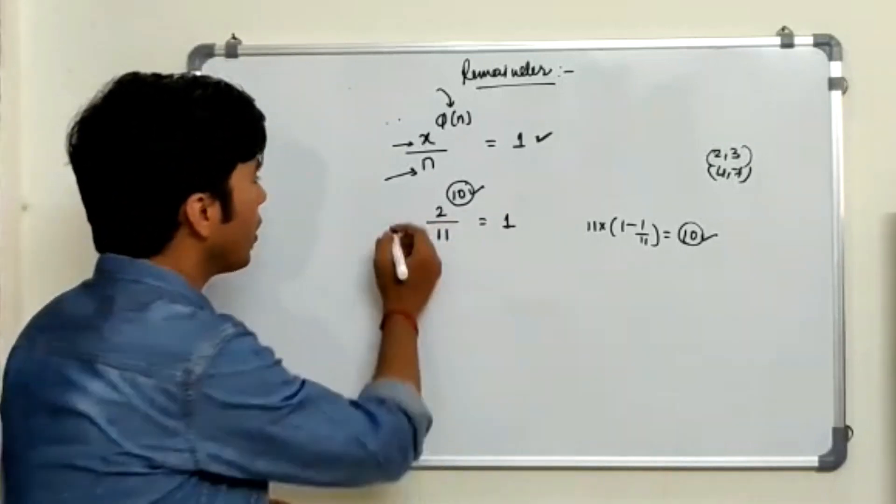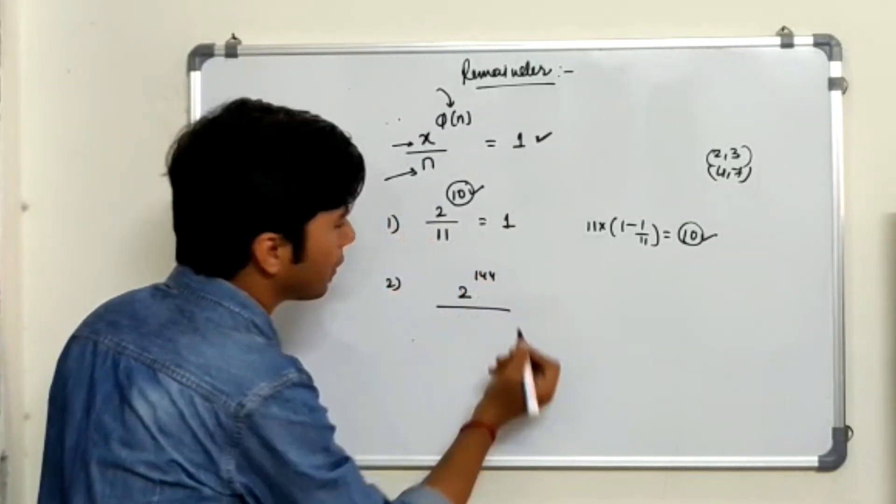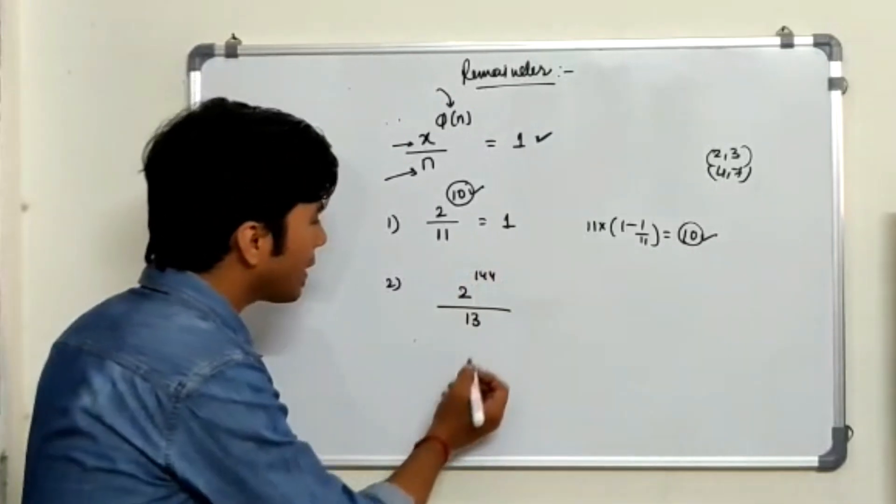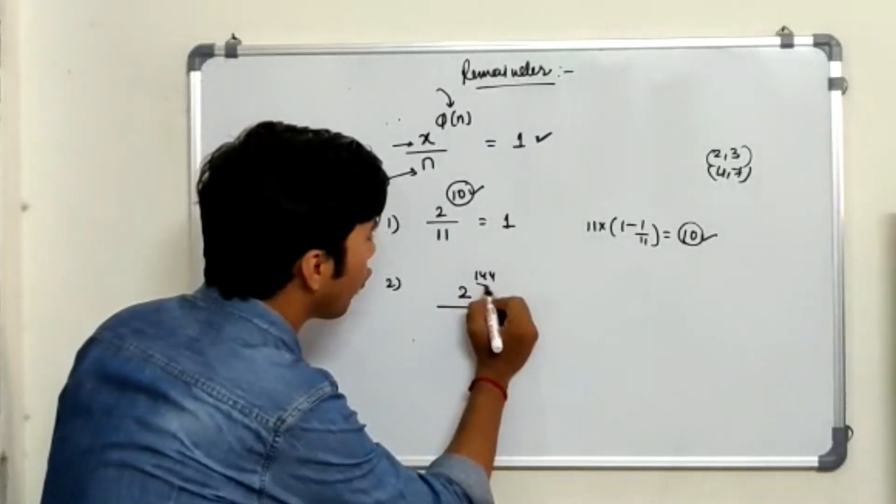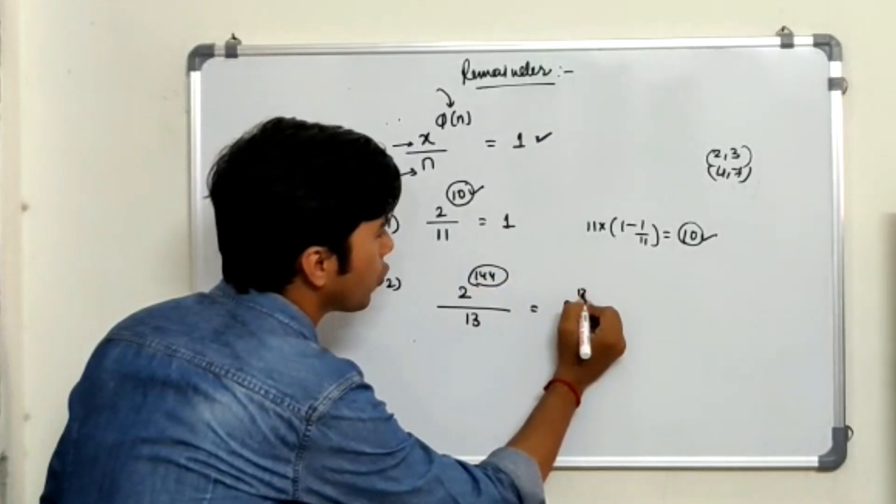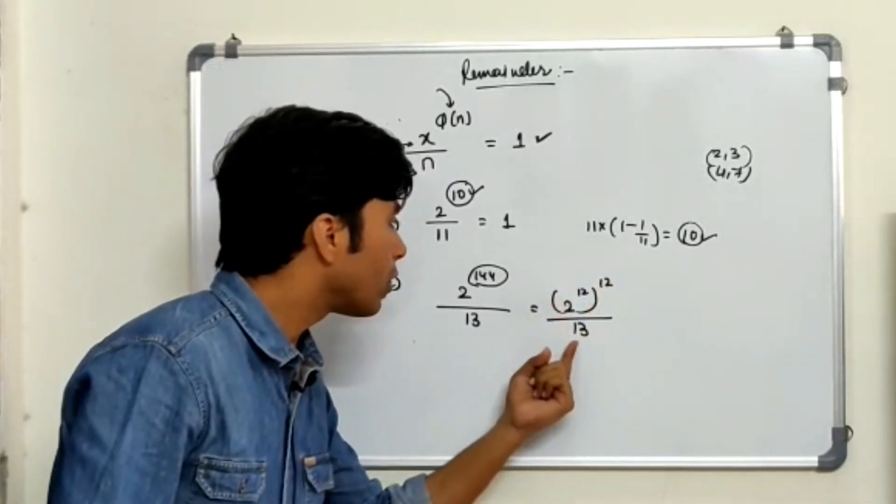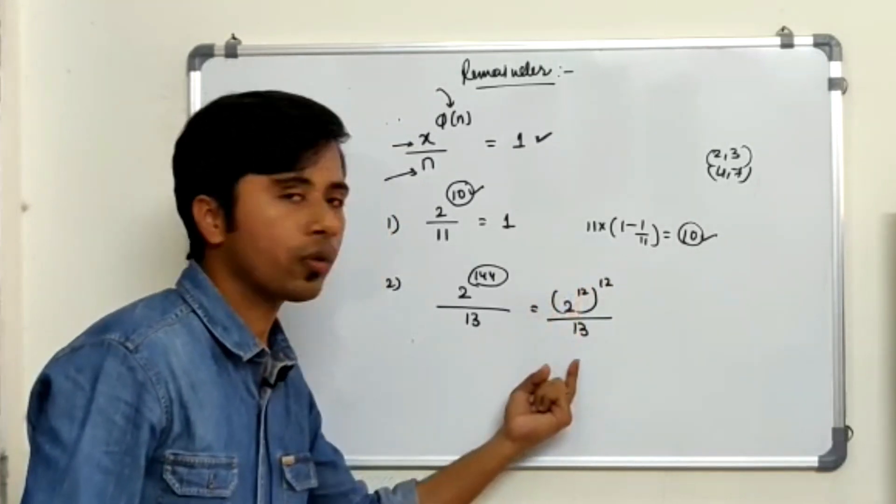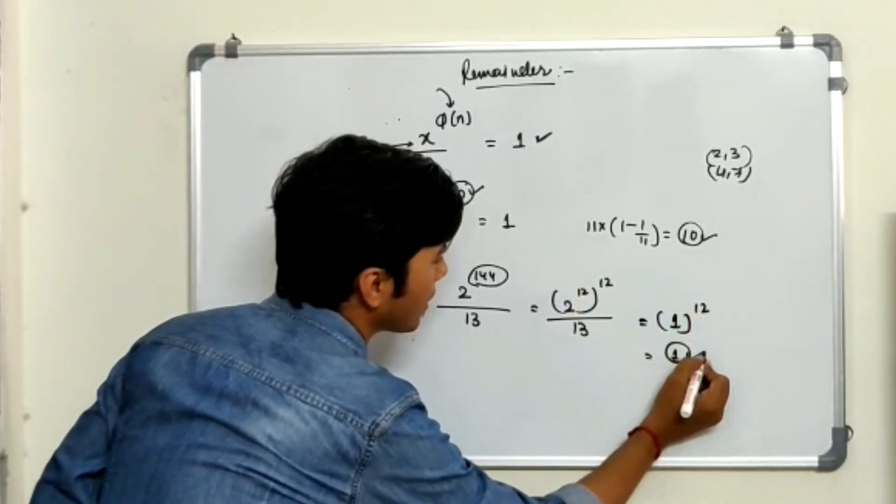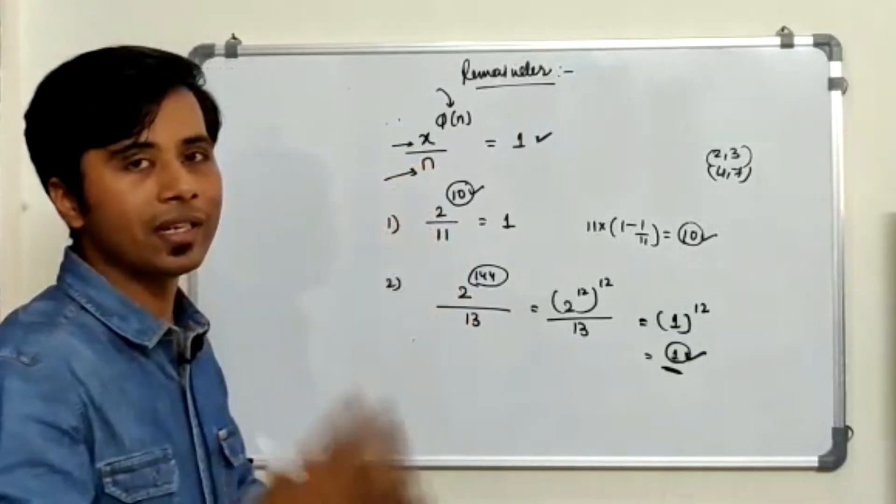Now the question might not be that straightforward. So we'll take few more examples. Let's say if I have 2 to the power 144 divided by 13. They're asking to get you the remainder. So now guys, I can see that 2 and 13 are coprime to each other. But is 144 totient of 13? So guys, we can just do a simple manipulation here. What we can do is I can write this as 2 to the power 12 and whole power is 12 upon 13. So I see that these two are coprime to each other and now this is also the totient of 13. So what will be the remainder here? Remainder is going to be nothing but 1 to the power 12. So my answer still remains as 1. So you can see that using Euler's theorem, my remainder calculations become really easy and calculating these difficult questions really becomes very simple.